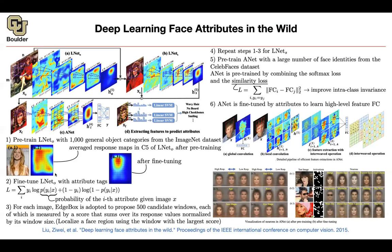So we hit multiple objectives with this paper: one was localizing faces, the other was learning face attributes. Why is this important? Because you're moving toward general AI — you want your robot to understand whether you have baby hair, whether you're smiling, whether you're happy or angry. Any questions? The only part not covered in detail was the interweaving operation. The rest was pre-training, fine-tuning, pre-training, fine-tuning steps using multiple datasets: ImageNet, CelebFaces, and the dataset corresponding to face attributes.